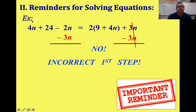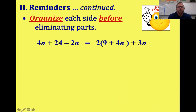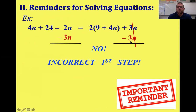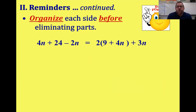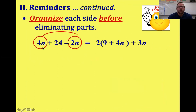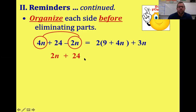Here's the reminder: organize each side before you start to eliminate. We can't subtract variables when there are like terms still floating around. On the left side, with my fence drawn in, I see 4 nuggets and minus 2 nuggets — combining those gives me 2 nuggets plus 24. There's nothing else to combine on the left side.